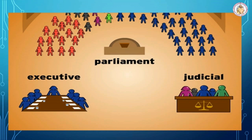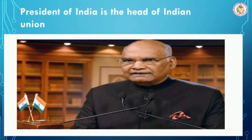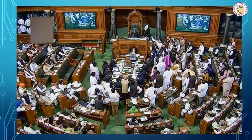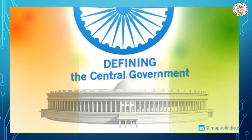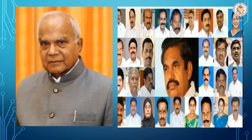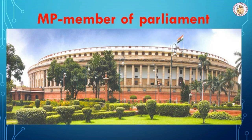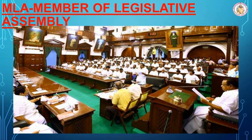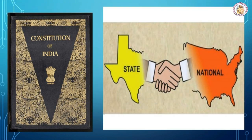India is a parliamentary democratic republic where the President of India is the head of the Indian union, and the prime minister and all the ministers are responsible for smooth running of the government. This is called the central government. All the states and union territories have separate governments to run their own administration. The governor, chief minister, and all the ministers constitute the state government. The member of the parliament is called MP, whereas the member of the Legislative Assembly is called MLA. Both the central and state governments work according to our constitution.